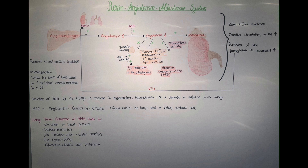Angiotensin-2, once produced, has many stimulating effects. It increases sympathetic tone, responsible for the body's fight-or-flight response. It increases cardiac contractions by stimulating the myocardium's inotropy as well as chronotropy. It signals the posterior lobe of the pituitary gland to release antidiuretic hormone, increasing water reabsorption within the collecting ducts of the kidney. It also signals the adrenal gland to secrete aldosterone, which increases sodium reabsorption and potassium excretion within the tubules of the kidney.